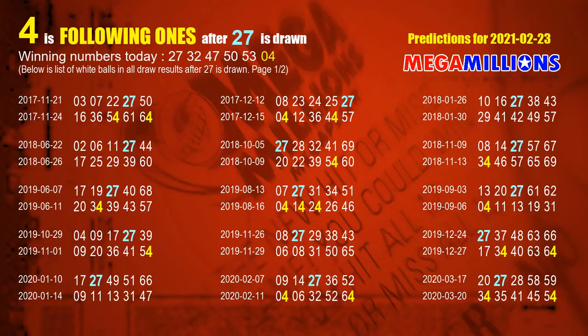First, let's find out the following ones through today's result. Following numbers refer to those numbers picked on the next draw after this one, and following ones are the units digits of those following numbers. The first white ball is 27. We list all draw results which are after a draw with 27 as a white ball winning number.